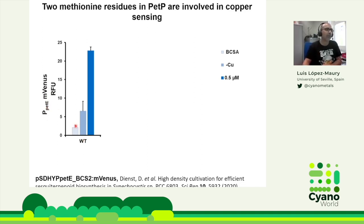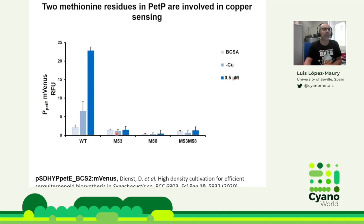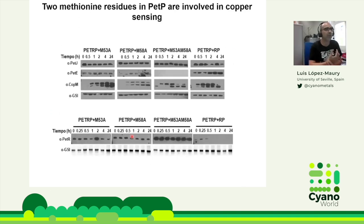In the wild type we see exactly what was described before — the PETE promoter is not expressed in the presence of the copper chelator BCS, a bit more expressed in minimal copper media, and much higher when copper is added. The cysteine mutants — single or double — were really affected in copper sensing. The single mutants showed an intermediate phenotype, while the double mutant resembled the PETP knockout: no plastocyanin accumulation and higher PETR levels. This confirms that these two methionines are involved in copper sensing, and that losing only one is not enough to completely abolish sensing.